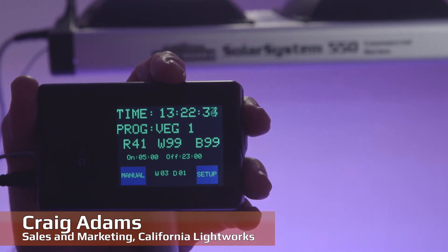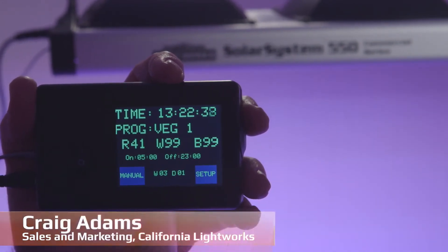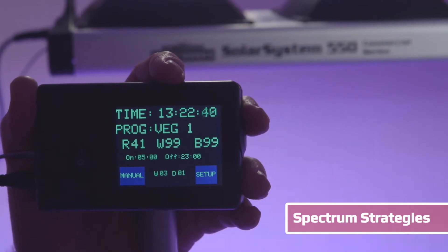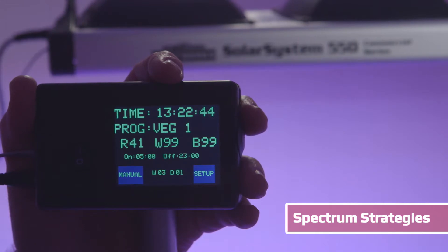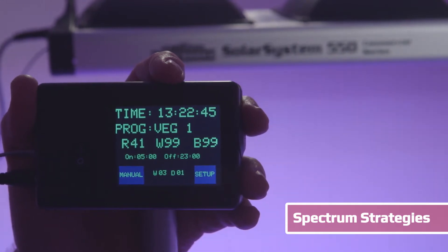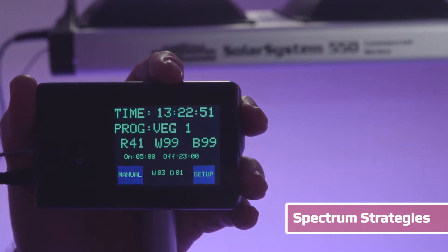Now we're using the Solar System programmable controller and we'd like to discuss some strategies about how light spectrum affects plant growth. Obviously this is a complex subject that varies by strain, but here's some basic information to help you set up your own programs.